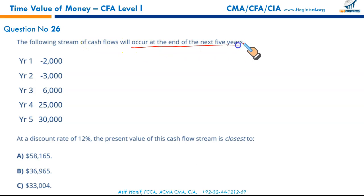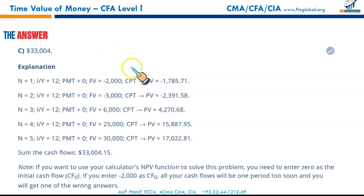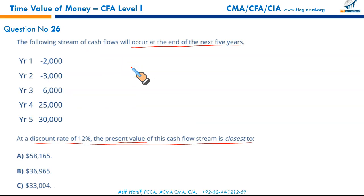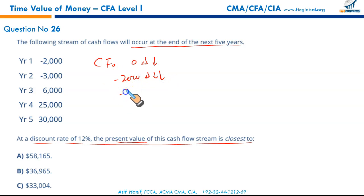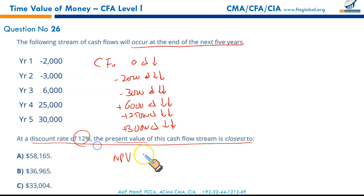Question 26: the following uneven cash flow stream occurs at end of the next five years — calculate the present value. Use the CF/NPV function. CF0 = 0, then -$2,000, -$3,000, +$6,000, +$25,000, +$30,000. Press NPV, discount rate = 12%, enter, down arrow, CPT. Result: $33,004.14 — that is the present value, making C the correct option.